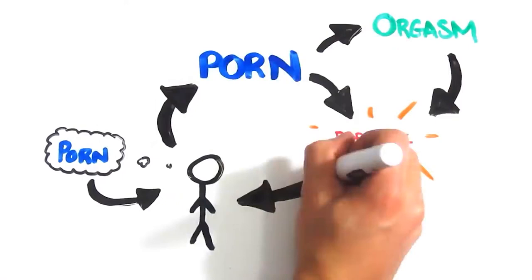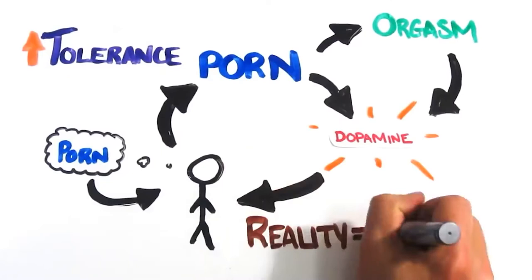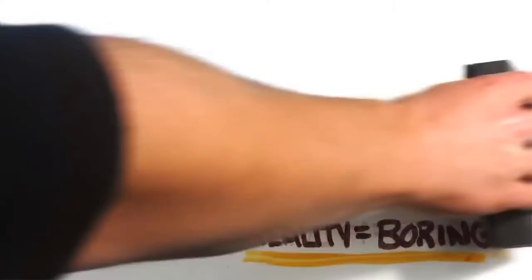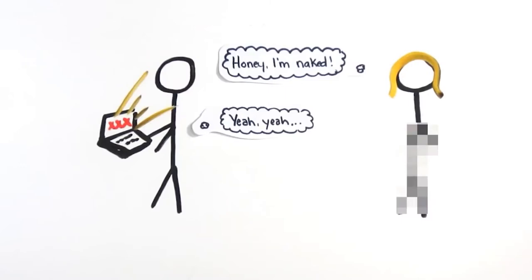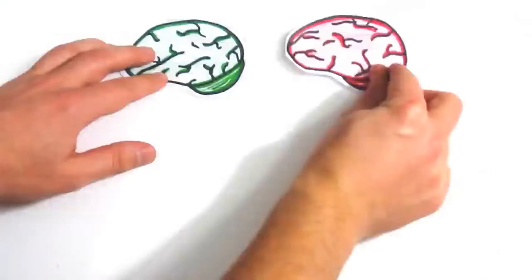And just like a drug, your tolerance for visual stimulation has now compounded, making it more difficult to be turned on by reality. Pornography addiction can often lead to finding your mate less attractive. The good news is, it doesn't have to be permanent. Usually when people understand the mechanism and realize it's affecting their relationships, they can stop.